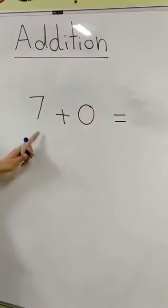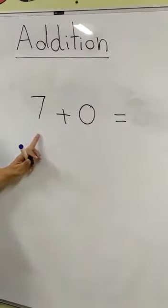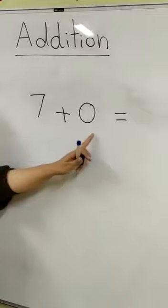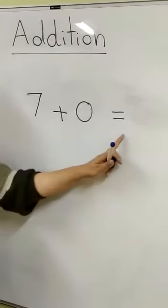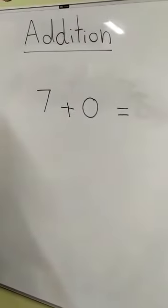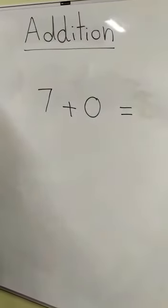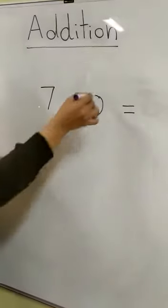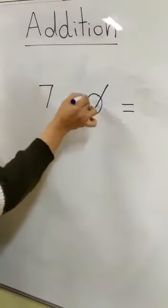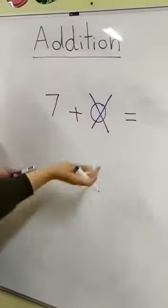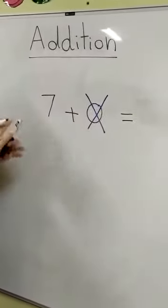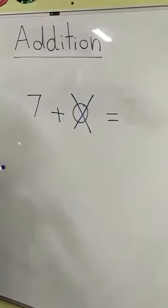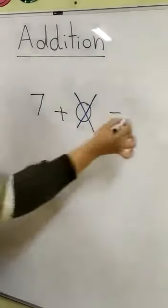Let's read: seven plus zero equals. Zero means nothing, so let's cross out the zero. Seven plus nothing equals seven. Seven! Excellent class.